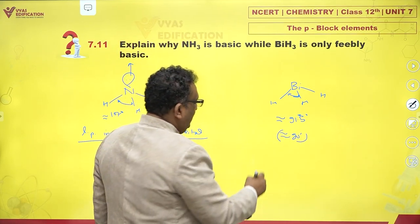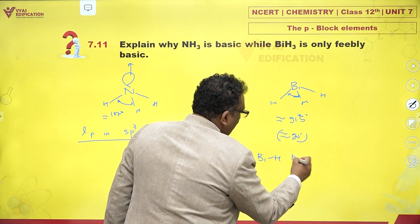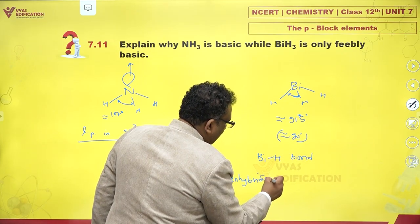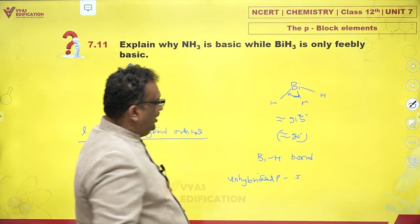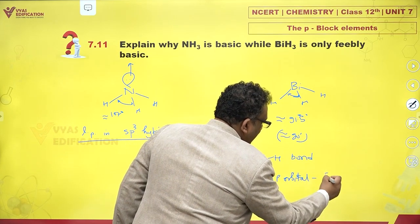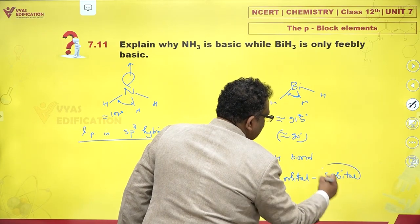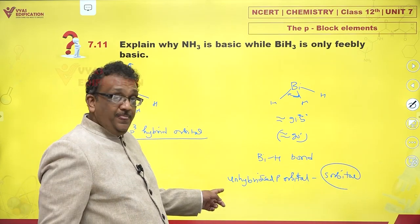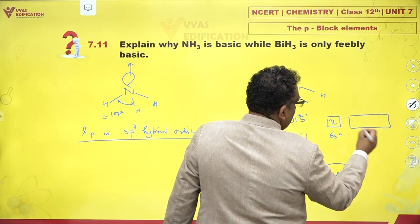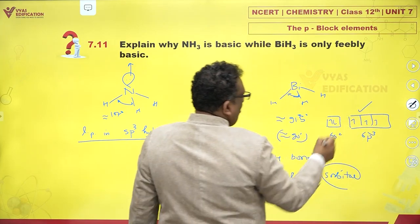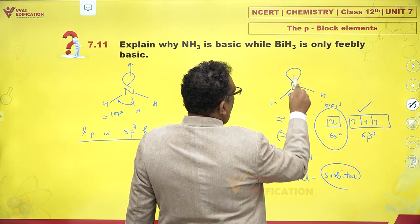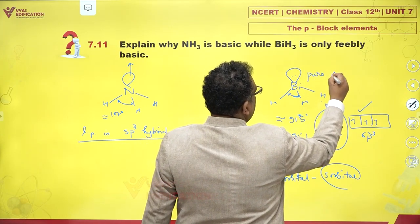That means the bismuth–hydrogen bond is formed by unhybridized p and s orbitals. Bismuth has unhybridized p orbitals, and hydrogen has just an s orbital. Looking at the electronic configuration of bismuth — 6s², 6p³ — the p orbitals are used for bonding, and the 6s² lone pair is inert. So the lone pair lies in a pure s orbital.